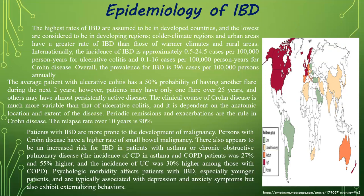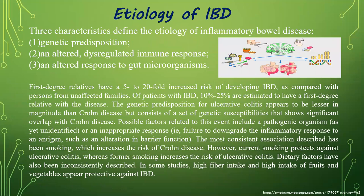Patients with inflammatory bowel disease are more prone to development of malignancy; persons with Crohn's have a higher rate of small bowel malignancy. There also appears to be an increased risk for IBD in patients with asthma and chronic obstructive pulmonary disease. Psychological morbidity affects patients, especially younger patients, who are typically associated with depression and anxiety symptoms and also exhibit externalizing behaviors. Three characteristics define the etiology of IBD: genetic predisposition, altered or dysregulated immune response, and altered response to gut microorganisms.